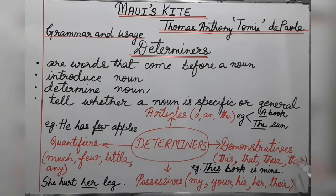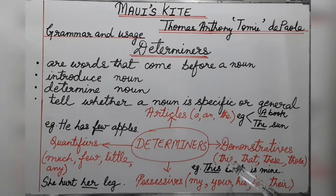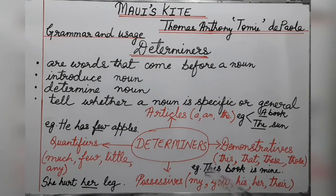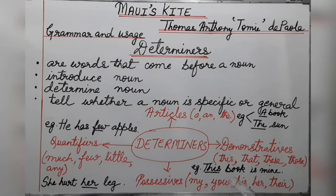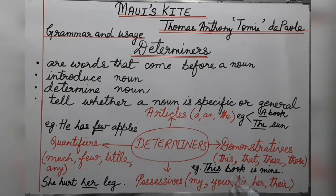Now let's move to the second type: demonstratives. They are: this, that, these, those. For example, 'This book is mine.' Here book is the noun and we are using the determiner 'this.' So 'this' is a demonstrative and we are using it with the noun 'book.'